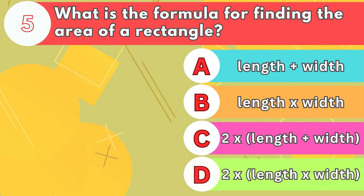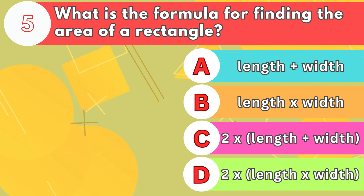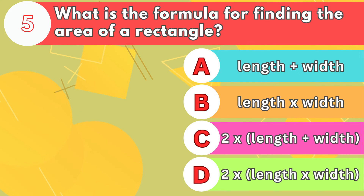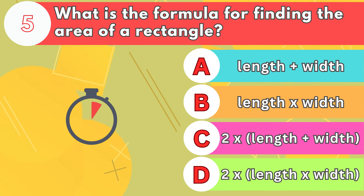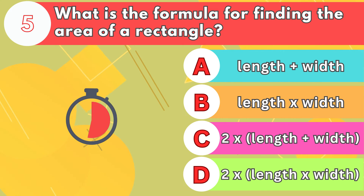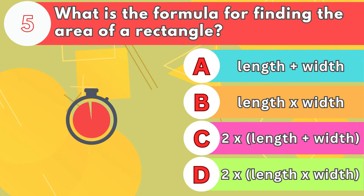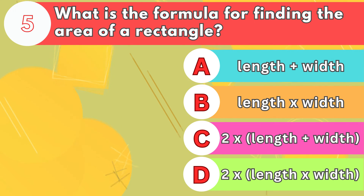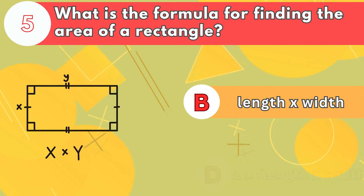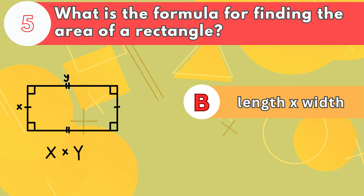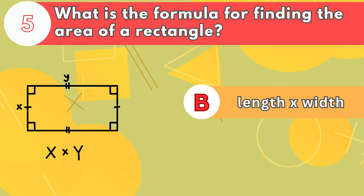Number 5. What is the formula for finding the area of a rectangle? The answer is letter B, length times width.